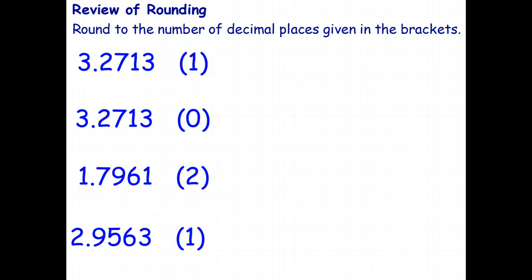Okie dokie. We want to round this number here 3.2713 to one decimal place. So this is the method that I teach my students. After they've done this for a while they can probably skip the setting out and just do it, but it's a good way to start.